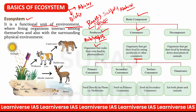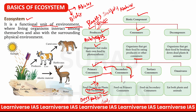Consumers कई तरह के होते हैं। Primary consumer वो जो plants पे feed करते हैं — इनको herbivores कहते हैं, जैसे deer, rabbit, cow। Secondary consumer वो जो primary consumer को feed करते हैं — ये carnivores होते हैं। और जो बड़े carnivores छोटे carnivores को खाएं जैसे tiger, उनको tertiary consumers कहते हैं, इनको secondary carnivores भी कहते हैं।